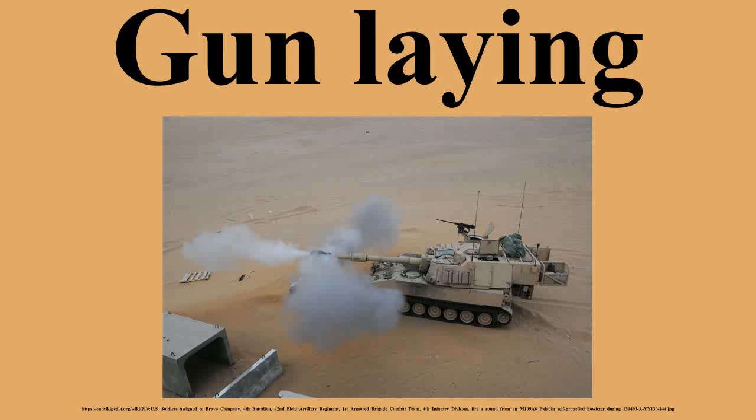Gun laying is the process of aiming an artillery piece, such as a gun, howitzer, or mortar on land or at sea, against surface or air targets. It may be laying for direct fire, where the gun is aimed similarly to a rifle, or indirect fire, where firing data is calculated and applied to the sights. The term includes automated aiming using, for example, radar-derived target data and computer-controlled guns.